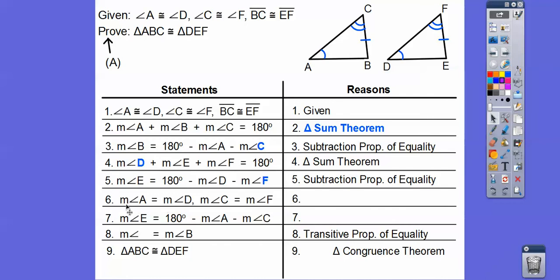It says the measure of angle A equals the measure of angle D — that's because they're congruent. Congruent angles have the same measures, so that's the definition of congruent angles. And since angle C equals angle F, that's also by the definition of congruent angles.